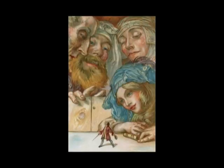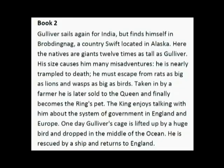In Book Two, Gulliver sails again, this time for India, and he finds himself in a place called Brobdingnag, possibly located near Alaska. This time, Gulliver is very, very small in comparison to the inhabitants, who are, for him, giants. He is, at the end of this journey, rescued by a ship and returns to England for a second time.